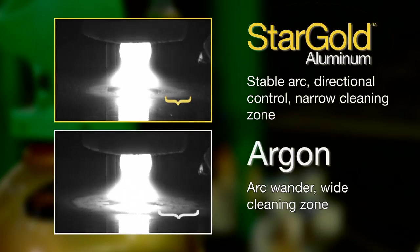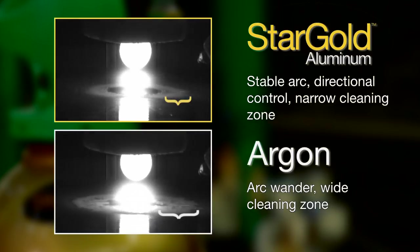With Stargold Aluminum, the arc has more stability, providing improved directional control, and the width of the cleaning zone is decreased to just beyond the edge of the weld puddle.